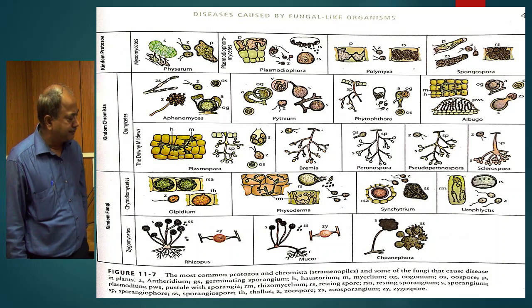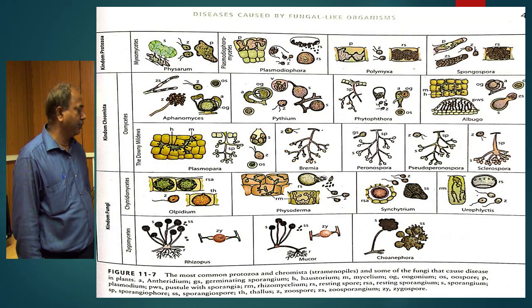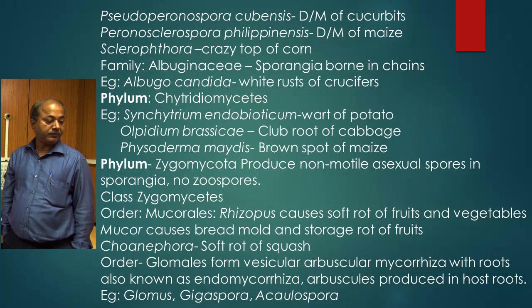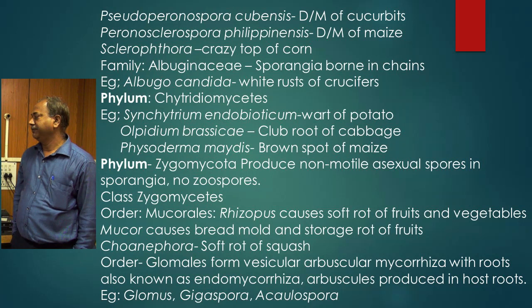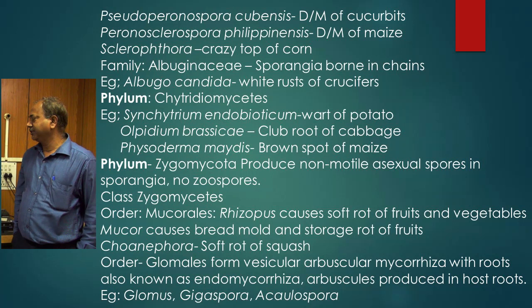The third kingdom is Fungi, which comes under two classes: Chytridiomycetes and Zygomycetes. In Chytridiomycetes, you have Olpidium, then Physoderma, then Synchytrium. Olpidium brassicae causes club root of cabbage. Then Physoderma maydis causes brown spot of maize; the brown spots appear on the midrib of the leaf, which is a distinguishing character.